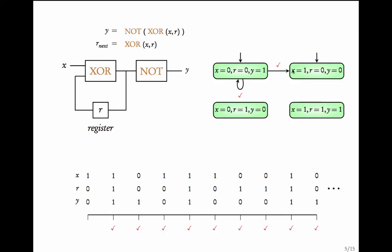Continuing to draw the transitions: with similar arguments you can complete the picture and arrive at the final transition system. Executions like the one we traced correspond to paths in this transition system.